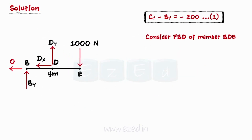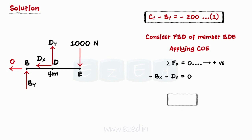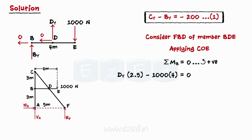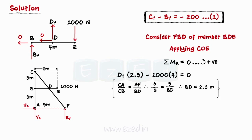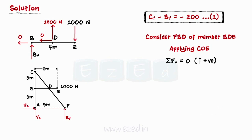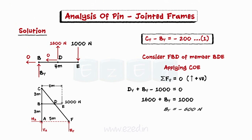Consider the FBD of member BDE. Applying conditions of equilibrium: equating summation of forces in the x direction to zero gives the x component of pin reaction at D as zero. Then, equating the summation of moments about point B to zero, we determine the moment arm of Dy using similarity of triangles CAF and CBD, finding BD equal to 2.5 meters. Thus, the y component of pin reaction at D is 1600 N in the assumed direction. Finally, equating forces in the y direction to zero, we get the y component of pin reaction at B as 600 N, acting opposite to the assumed direction.